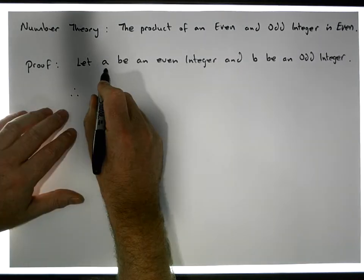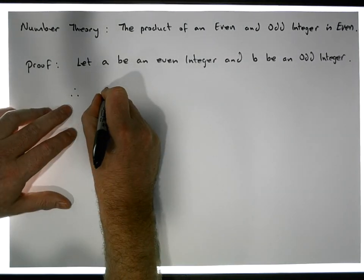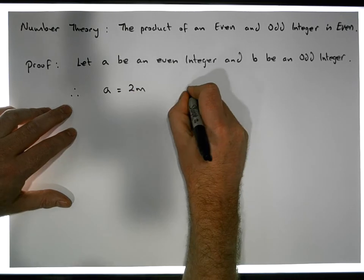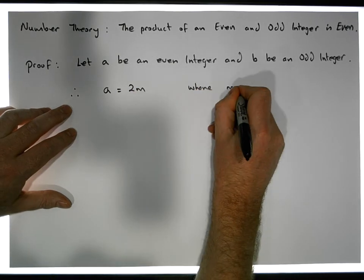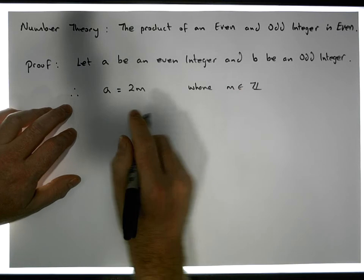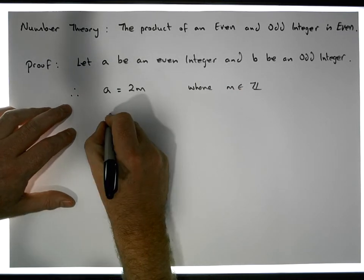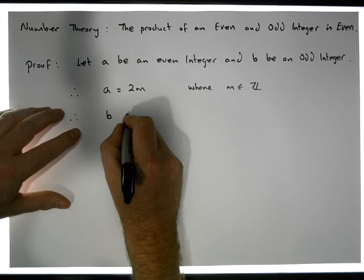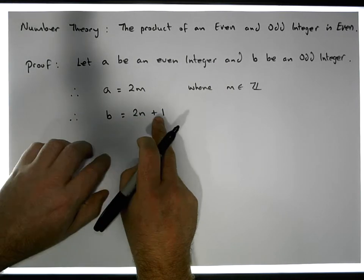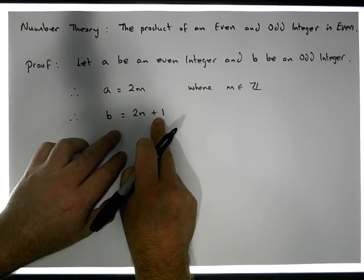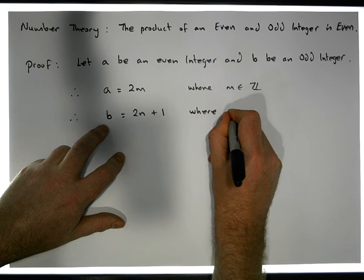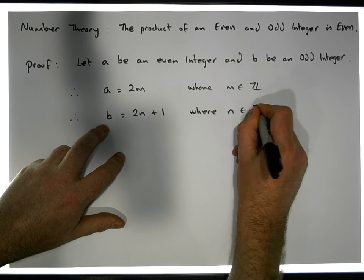So therefore, from the division algorithm, what we know is that a is even, so a must be equal to 2 times some other number, where m is an integer. And what about b? Well, b is odd, so therefore b must be equal to 2 times some number plus one — an even number plus one — because it is an odd integer, where n is an element of ℤ.